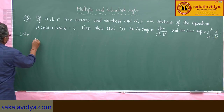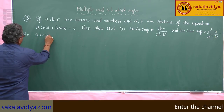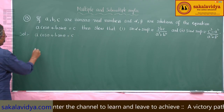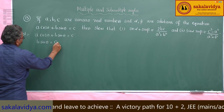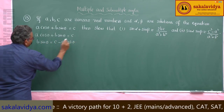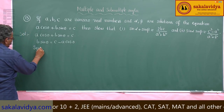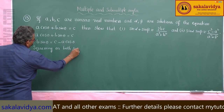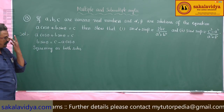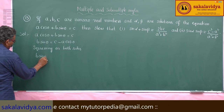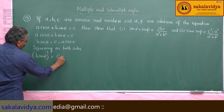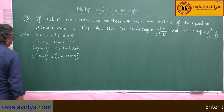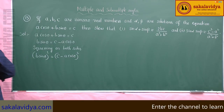Given A cosθ plus B sinθ equal to C. We can write B sinθ equal to C minus A cosθ. However, it is better to go the other way: write A cosθ equal to C minus B sinθ, and then square on both sides.